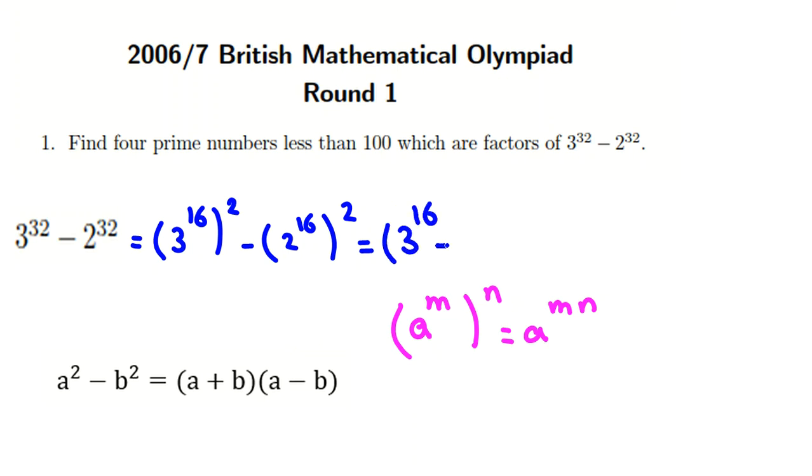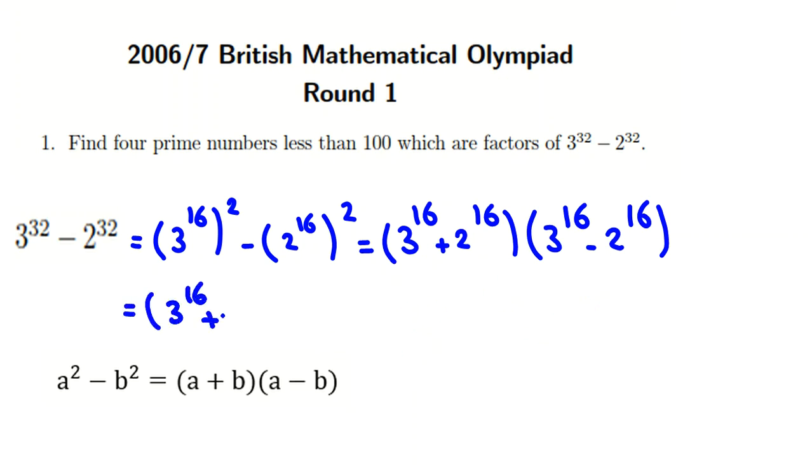It will be 3 to the 16 plus 2 to the 16 times 3 to the 16 minus 2 to the 16. If we use again this identity, I write the first term, 3 to the 16 plus 2 to the 16. Here it is 3 to the 8 squared. So if we use exactly the similar thing, it will be 3 to the 8 plus 2 to the 8 times 3 to the 8 minus 2 to the 8.